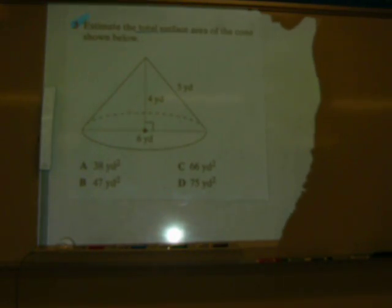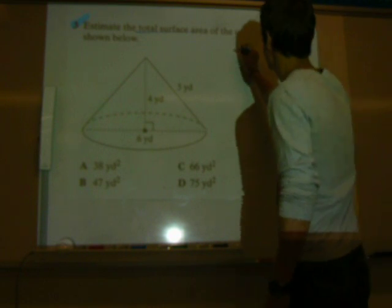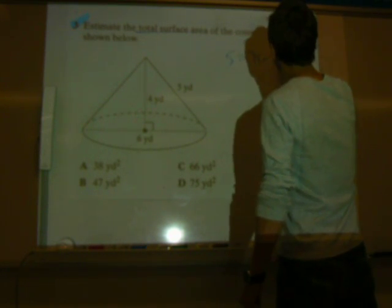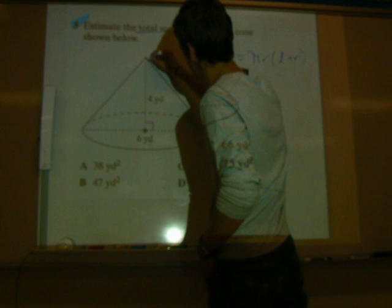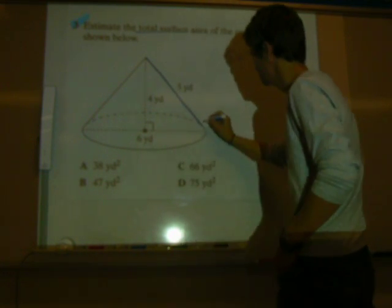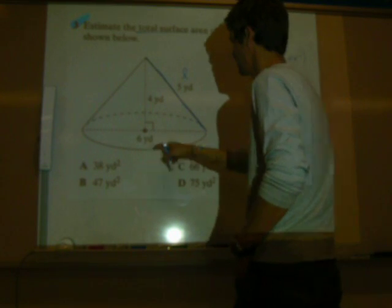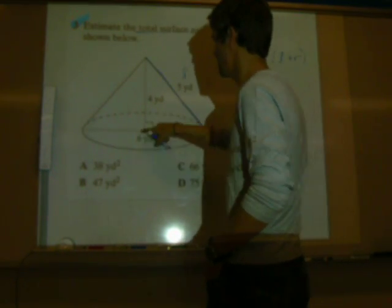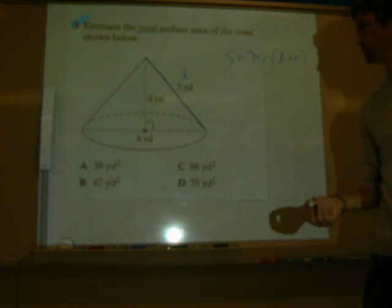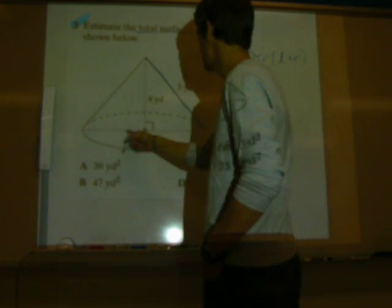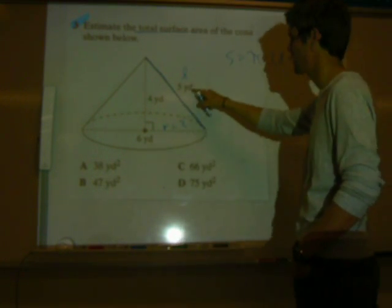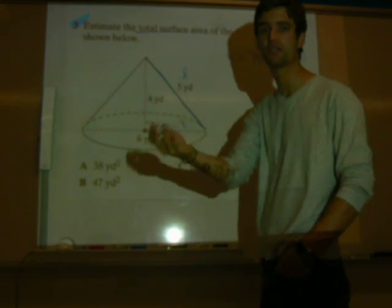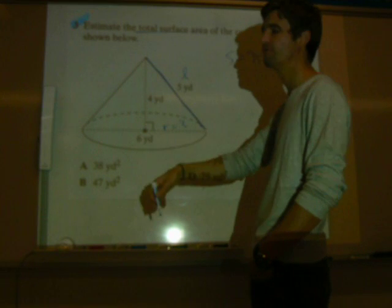So, remember, lateral is just the sides. Total is all of it. Equals, there's two equations. Pi RL plus pi R squared, or pi R times L plus R. Guys, this is going to be easier. It's just to remember what's this L. So, I'm going to show you. So, pi R times L plus R. So, S equals pi R times L plus R. Well, what is the L? Remember, this guy is the L, the length from the top down to the base. So, this is our L.